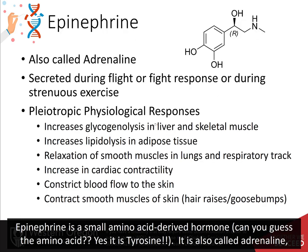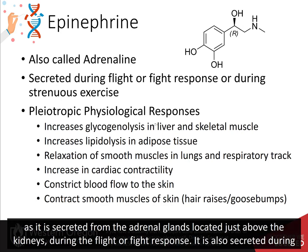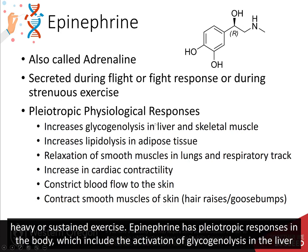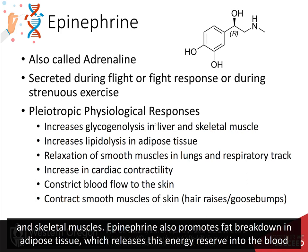Epinephrine is a small amino acid-derived hormone — the amino acid is tyrosine. It's also called adrenaline and is secreted from the adrenal glands located just above the kidneys during the flight or fight response. It's also secreted during heavy or sustained exercise. Epinephrine has pleiotropic responses in the body, which include the activation of glycogenolysis in the liver and skeletal muscles.